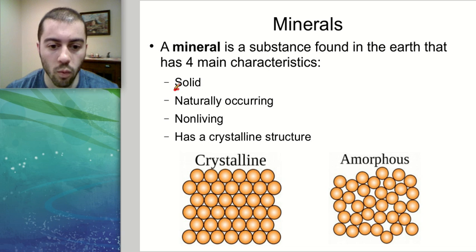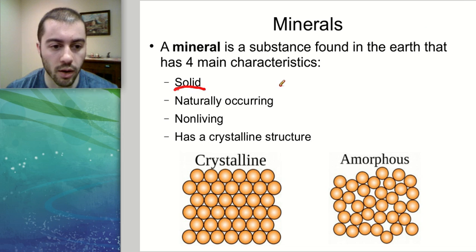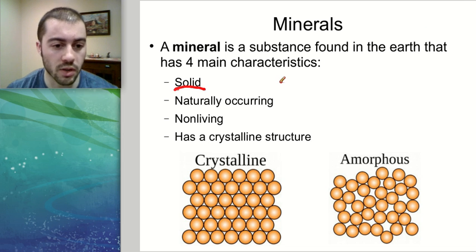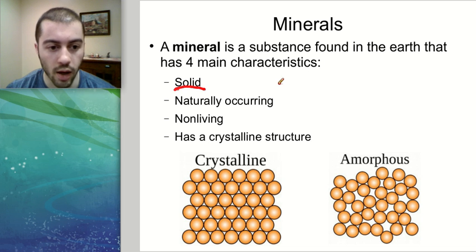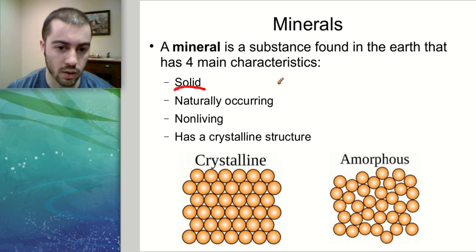The first characteristic is that it needs to be a solid. If an object is not a solid, then it can't be a mineral. For example, water in its liquid form is not a mineral because it's not a solid.